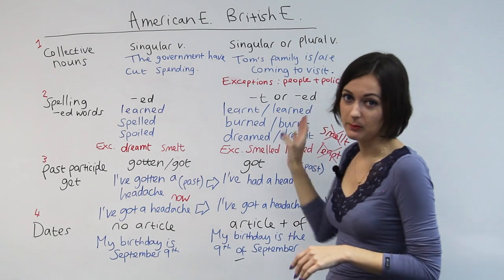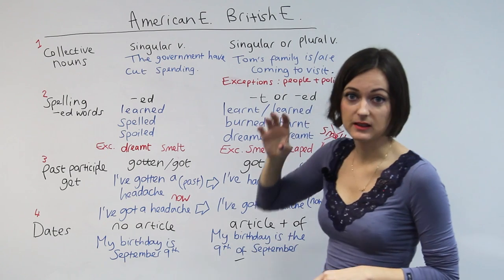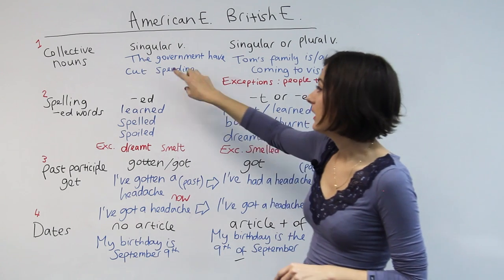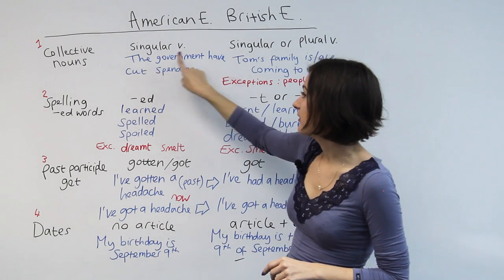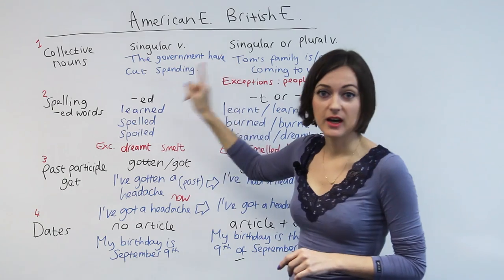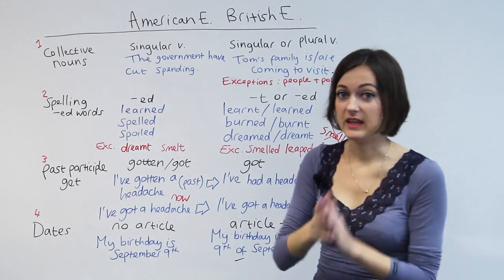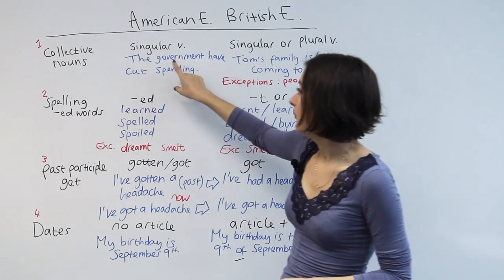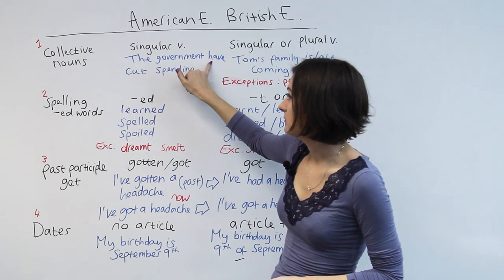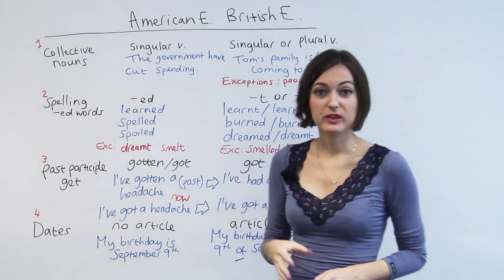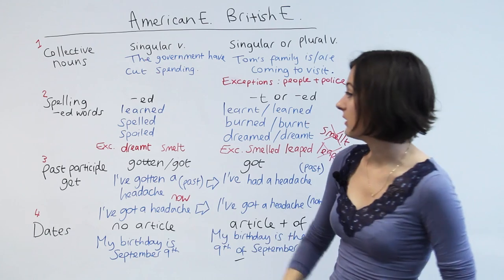Whereas in American English, we have to just use the singular verb. Here's an example: 'The government have cut spending' — in British English, government is seen as potentially plural. But in American English, government is seen as one thing, so we use the singular verb. Moving on now, rule number two.